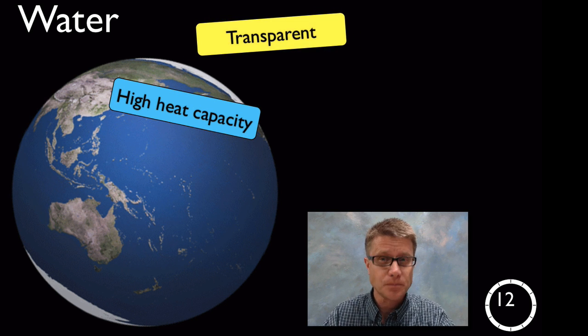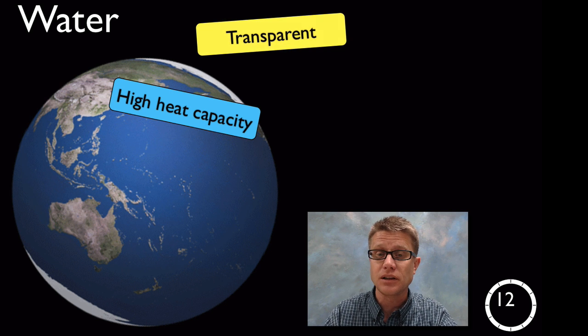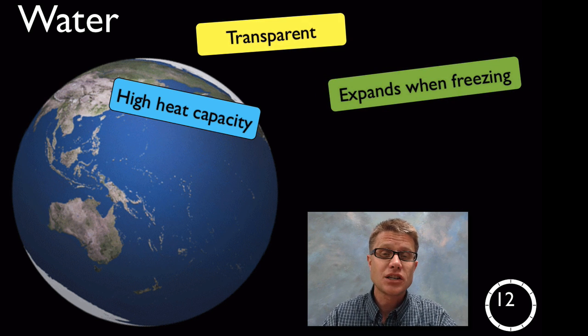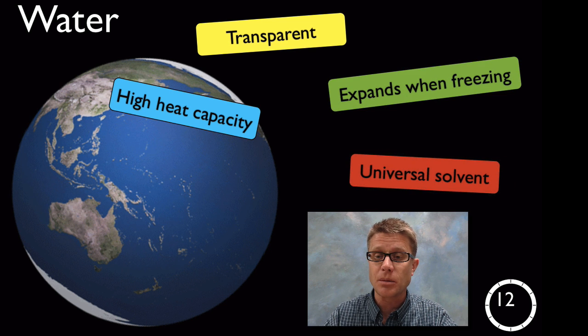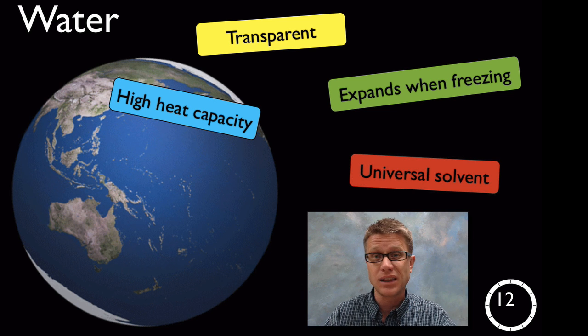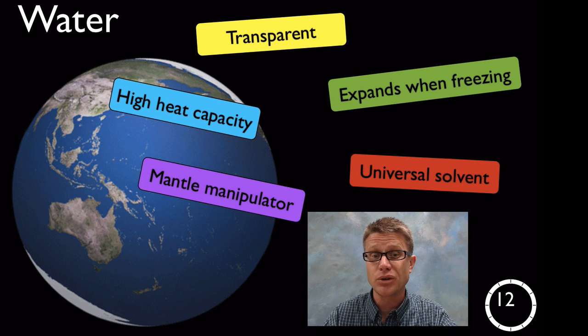It's going to be transparent. That allows sunlight to flow right through the water and allows life to live in the oceans. It expands upon freezing which is a unique chemical property. It's a universal solvent. That means it's really good at dissolving material. And it's why life is made up of water mostly.